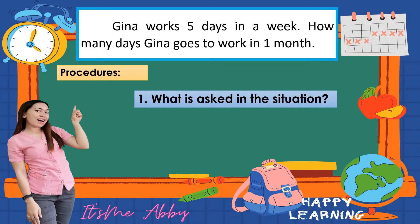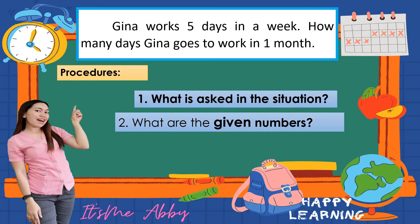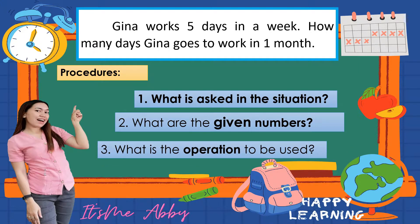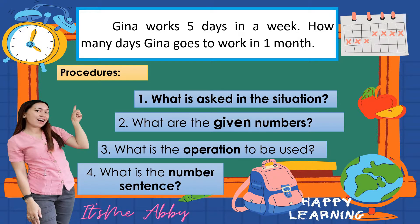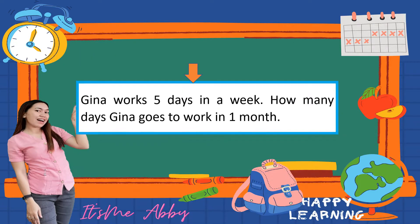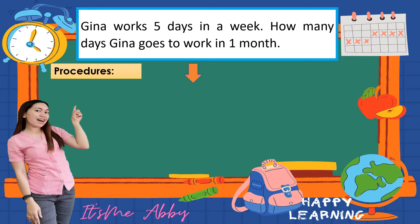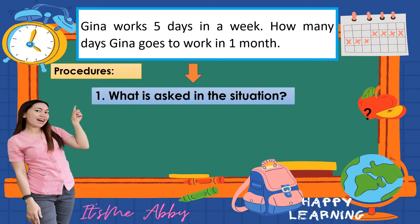First, you need to know what is asked in the situation. Second, what are the given numbers. Third, what is the operation to be used. And fourth, what is the number sentence of the problem. With this same problem, let's go through the first procedure or step.